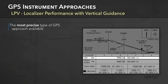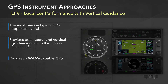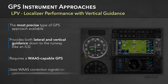On the other end of the spectrum is the LPV approach, which is the most precise type of GPS approach available. LPV stands for Localizer Performance with Vertical Guidance and provides both lateral and vertical guidance down to the runway, similar to an ILS. This requires a WAAS-capable GPS like the Garmin 430W or GTN 650 and uses the WAAS correction signals to generate an electronic glide slope, providing a stabilized approach path to the runway.